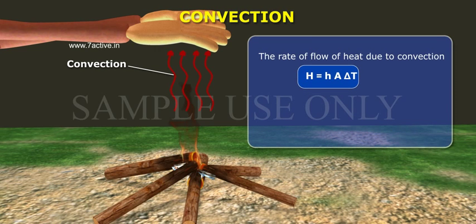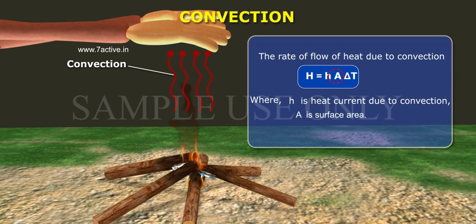The rate of flow of heat due to convection is given by H equals hA delta T, where H is heat current due to convection, A is surface area, and delta T is temperature difference.